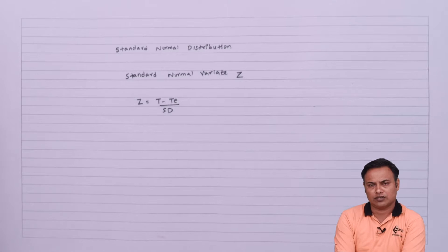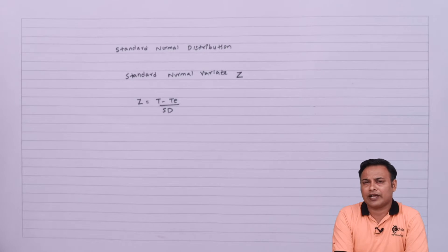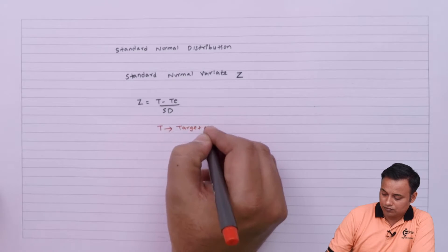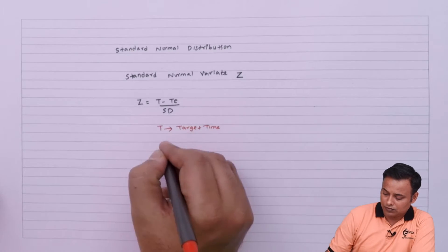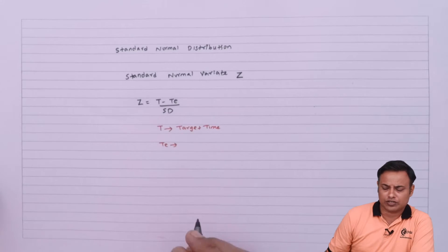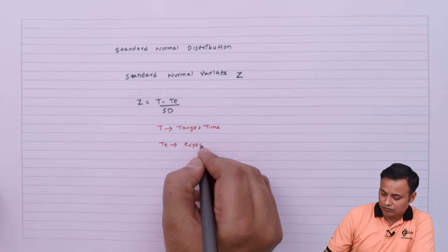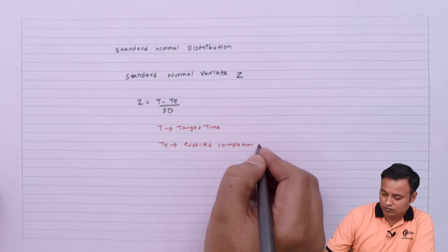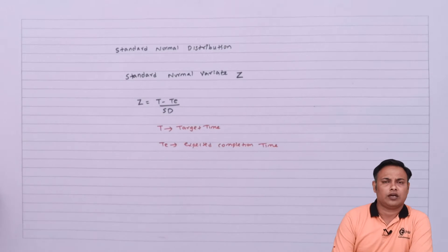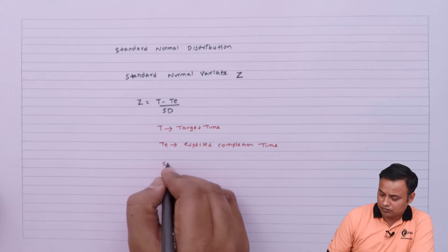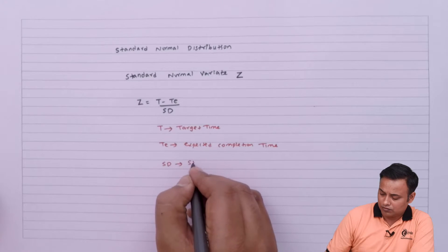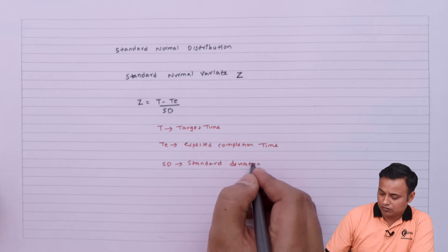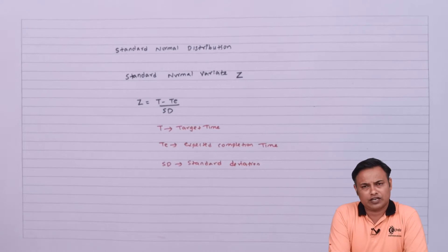Z is calculated as TE minus T upon standard deviation, where T stands for target time, TE is the expected completion time, and SD is the standard deviation of the critical path.